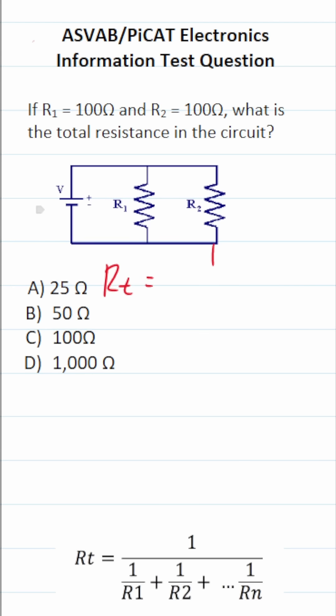is going to be equal to 1 over 1 over R1 plus 1 over R2. And we know R1 is 100 ohms and R2, likewise, is 100 ohms.